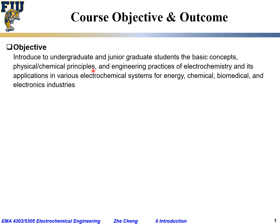We also cover physical-chemical principles such as how we get the open circuit voltage and how open circuit voltage relates to fundamental material Gibbs free energy or fundamental chemical properties, as well as the engineering practice of electrochemistry and its application in various electrochemical systems for energy, chemical, biomedical, and electronics industries.